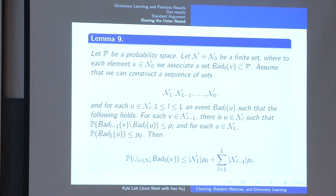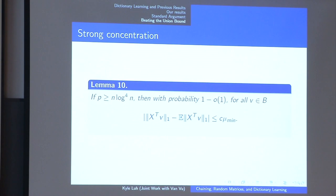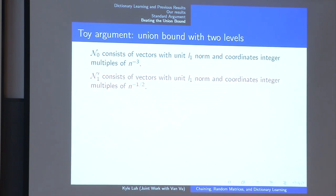Since we didn't know about generic chaining, we constructed a lot of these nets by hand, explicitly. I'll present the original solution mainly because it gives you a peek under the hood of what's going on instead of using high-powered industrial bounds we'll see later. One of the key points is that we construct our net using an L-infinity norm rather than the natural L1 norm. Instead of presenting the general argument, I'm going to show a toy argument using just two levels of chaining — it won't get the optimal answer, but it'll show the intuition.